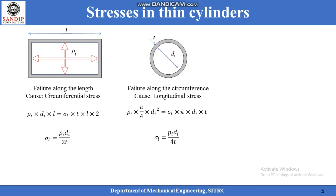The second failure mode exists along the circumference of the cylinder. In this failure mode the cylinder will fail like a cucumber in which the knife is passing perpendicular to the axis, i.e., in a transverse direction. The cause of this failure is the longitudinal stress induced in the material of the cylinder. The equilibrium equation can be written such that on the left-hand side is the force applied by the pressure acting on a circular cross-sectional area given by (π/4)·di².